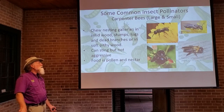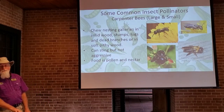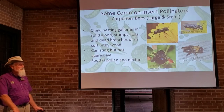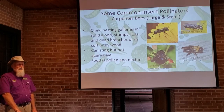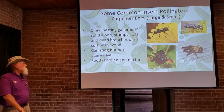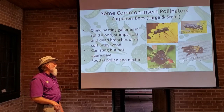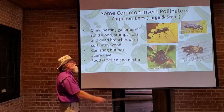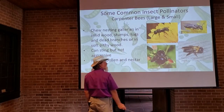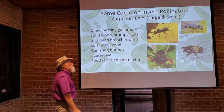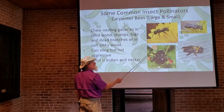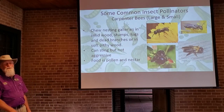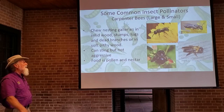Honey bees — one of the main pollinators everyone's heard of — are actually not native to North America; they were introduced around the 1600s. Honey bees can forage up to five miles in search of nectar and pollen, making them very effective pollinators used commercially to pollinate many fruits and vegetables. Here you can see honey bees with their pollen sacks on their legs, stuffed full of pollen to take back with them.